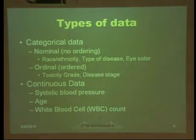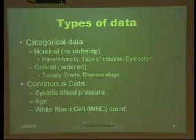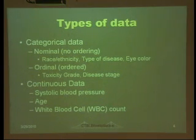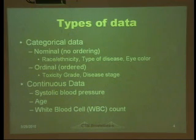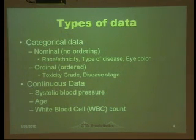You can divide the data into two groups: categorical data and continuous data. In categorical data, there are typically two kinds. The first one is nominal data, where there is no ordering — for example, race, types of disease, or eye color. On the other hand, there is ordinal data — for example, disease stage. Disease stage four indicates a more severe condition than disease stage one or two. So in that case, there is ordering.